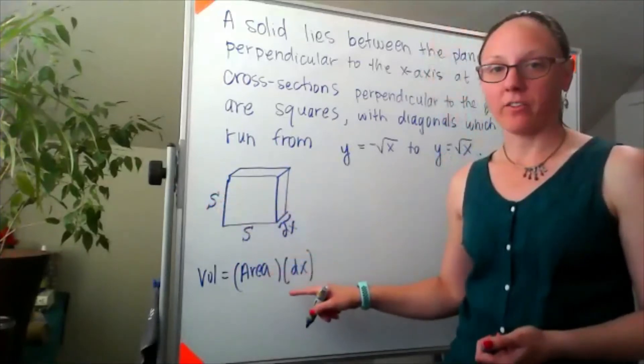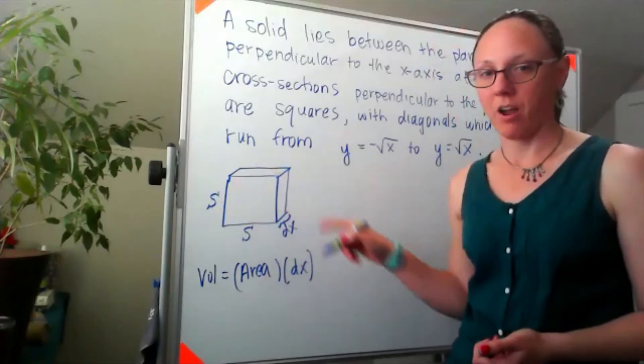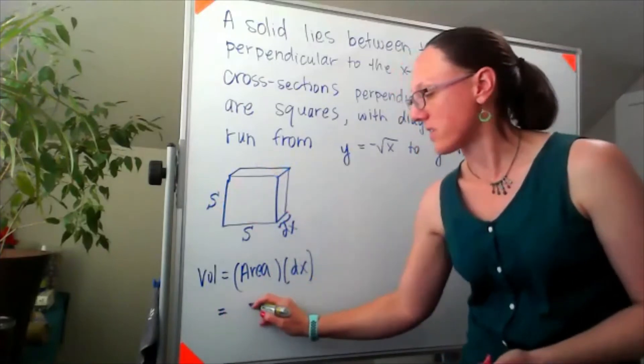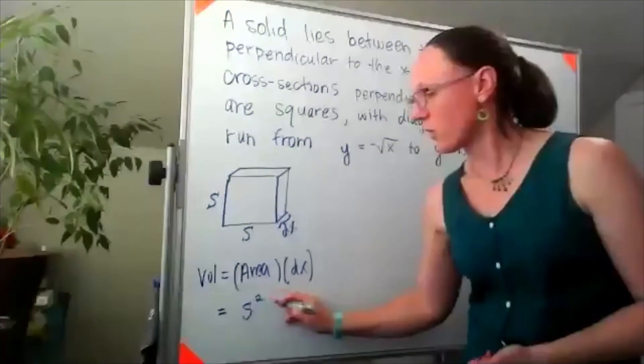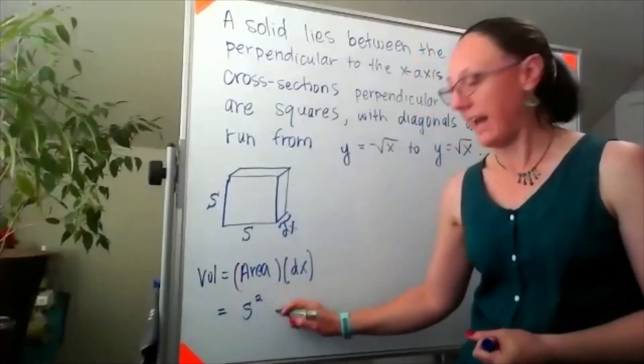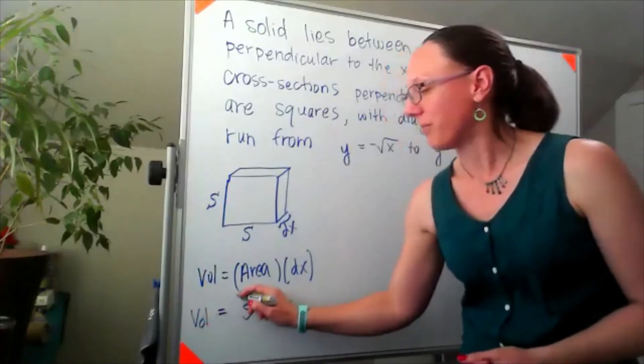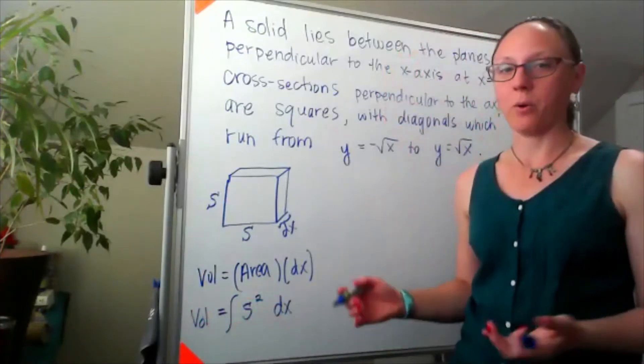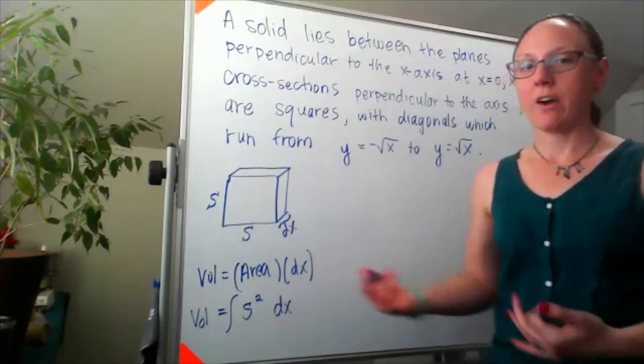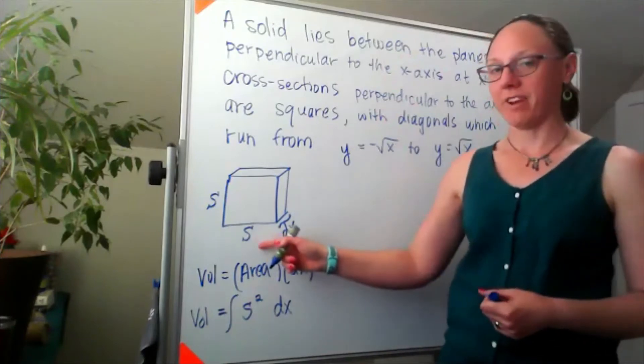So the cross-sectional area of our square is going to look like s squared. And then to find the volume, we'll be doing s squared dx, and in calculus style, I'm going to be adding that up with an integral. So now the question becomes, how do I find that s?